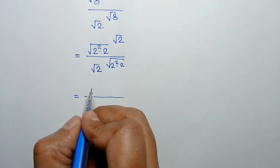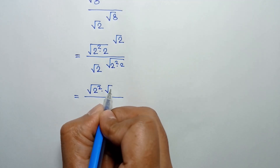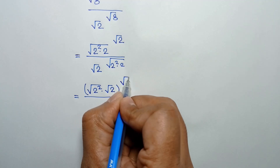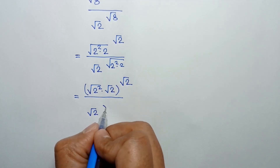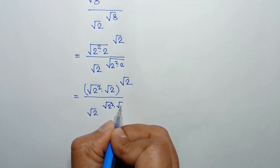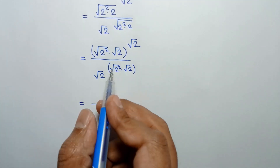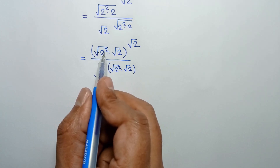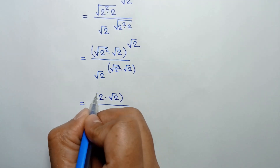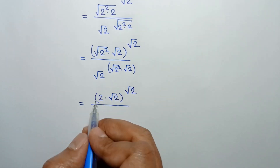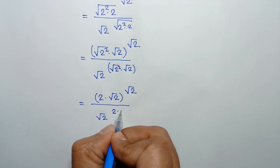Square root of 2 squared times 2 equals square root of 2 squared times square root of 2, whole to the power square root of 2. The square root and the square cancel out, leaving 2 times square root of 2, whole to the power square root of 2.